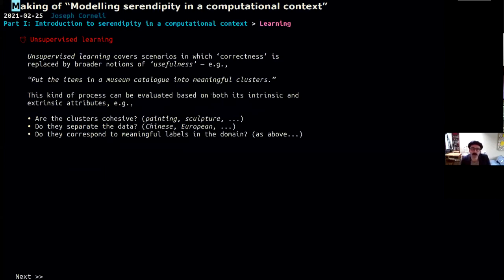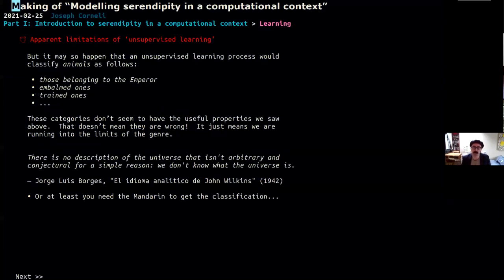Or on the other hand, you might reject the notion of correctness, and you go to a notion of usefulness. So what about putting the items in a museum catalog into some meaningful clusters? So here we've got painting, there we've got sculpture, here we've got things that originated in China, here we've got things that originated in Europe. And yeah, so these are some meaningful labels. But if it's unsupervised, you might get any kind of set of concepts out. So here's a classic example of classifying animals, those belonging to the emperor, embalmed animals, trained animals. And these categories, or the categorization system doesn't have this apparent usefulness, you know, that the other one I said about the museum category, that doesn't mean it's wrong. In fact, we didn't even have wrong in our lexicon when we were talking about this, it just means that we're running into some limits of what we can do with learning.